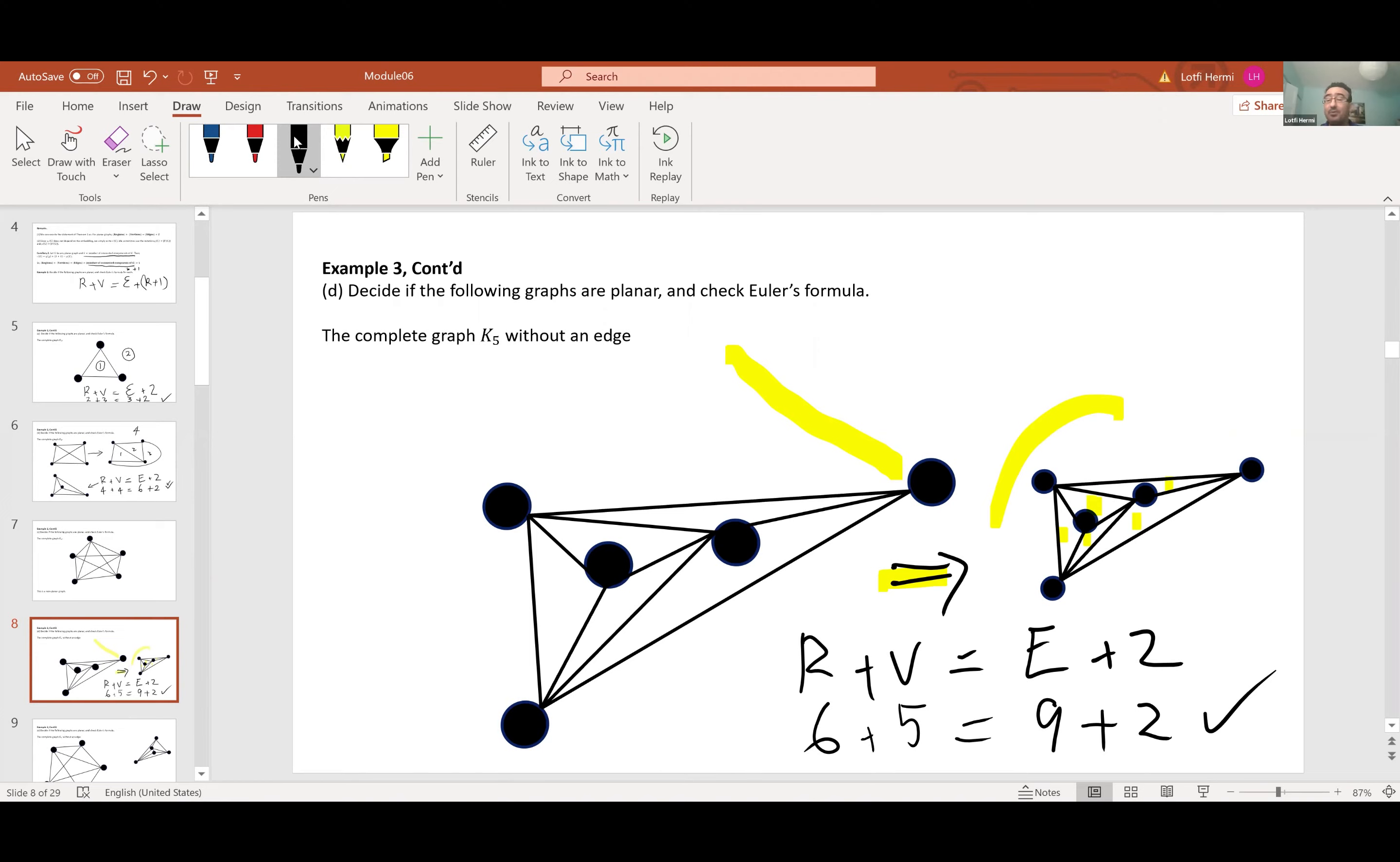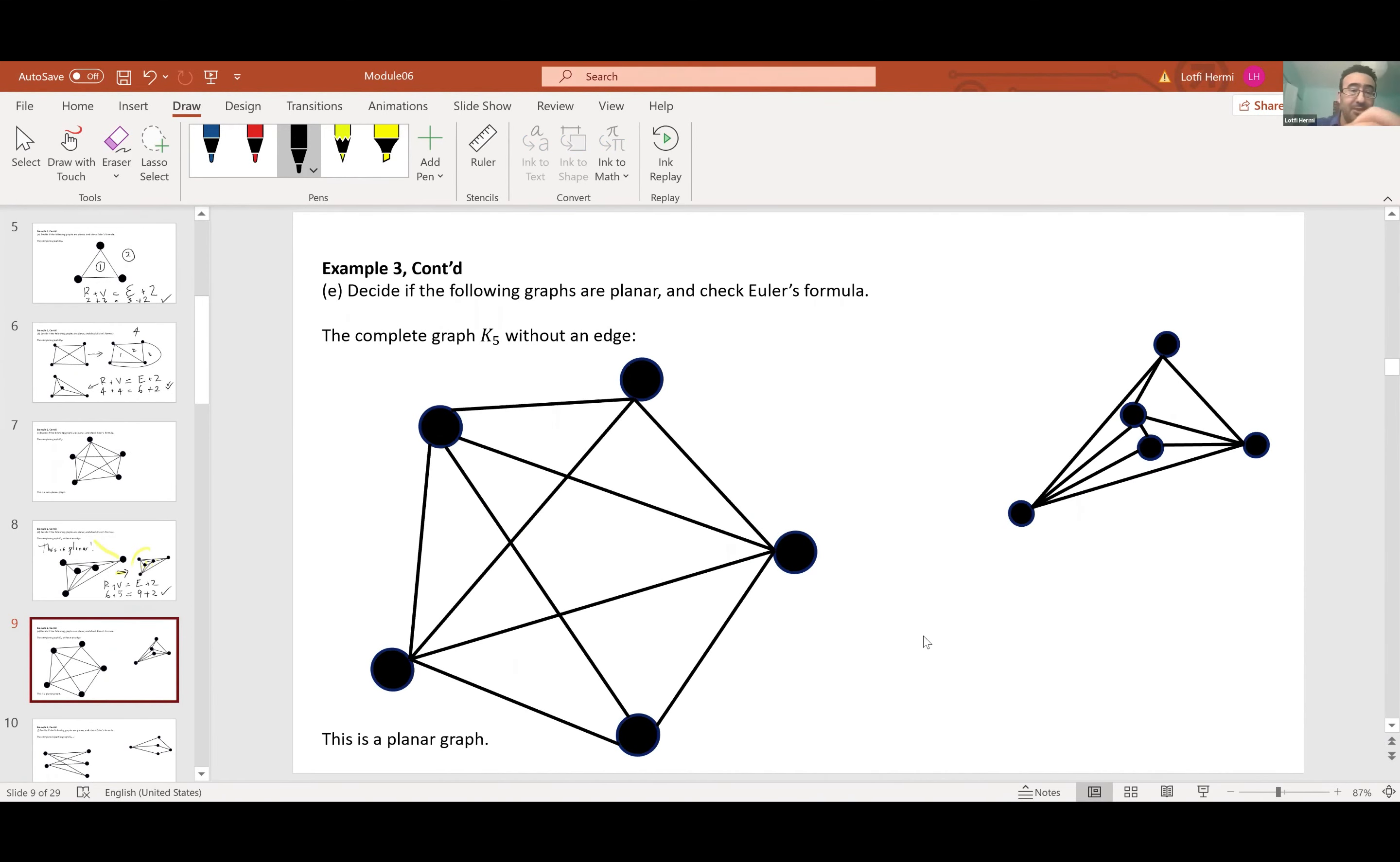So it's a planar graph. This is a planar graph. There's another version of this. I'm taking K5 and removing the edge between this vertex and this guy. I want to figure out if this is embeddable or not. I already put the answer here on the side as being planar. That's what I'm going to prove for you guys.